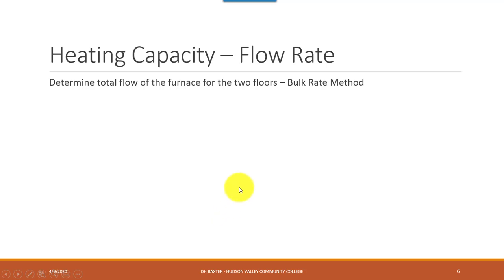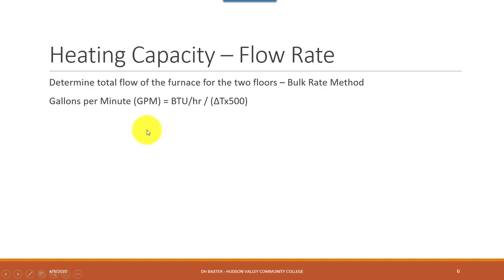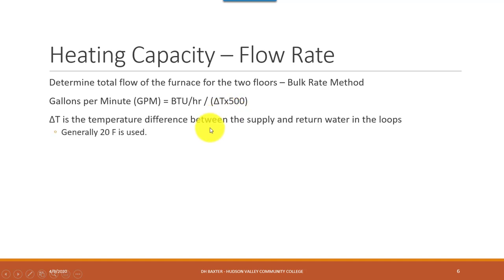So what kind of heat capacity can we expect? There are a couple of ways to determine how big your boiler needs to be, assuming you're going into new construction — not just replacing a boiler that's already there. I'm going to show you the bulk rate method, because this is what most people use. Our gallons per minute required equals BTU hours divided by the temperature change in the loop, times 500. The 500 is a conversion factor to get all the units right. Delta T is the temperature difference between the supply and the return water in the loops.